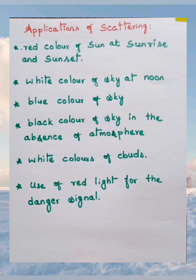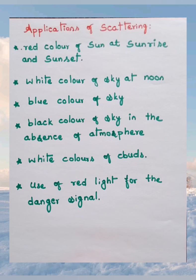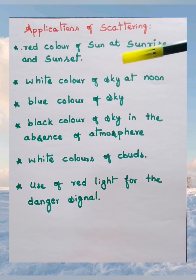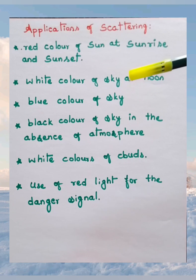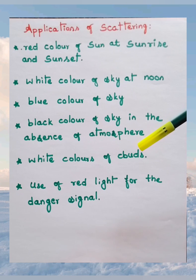Now let's move to the applications of scattering of light. We observe many natural phenomena daily but don't always connect them to physics. The phenomena we will cover are: the red color of the sun at sunrise and sunset, the white color of the sky at noon, the blue color of the sky, the black color of the sky in the absence of atmosphere, why clouds are white, and the use of red light for danger signals.